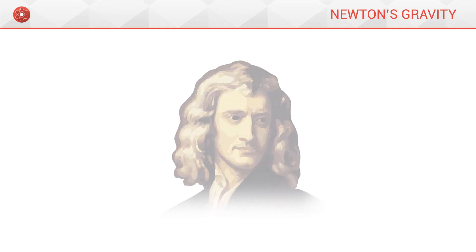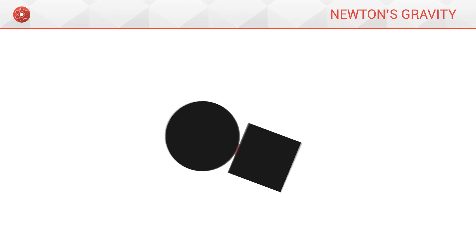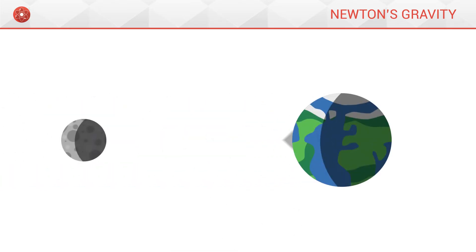What is gravitation? In the universe, all objects that possess a mass attract each other. For example, the moon attracts the Earth, and the Earth attracts the moon.